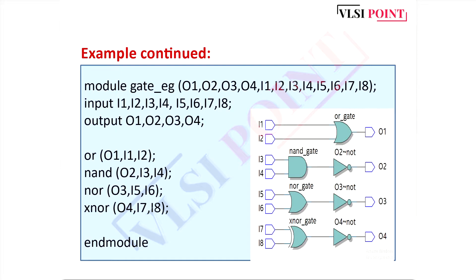Another example is also here. You can see that without giving the instance name, we can also write this circuit. There is an or gate, then and plus not gives nand gate, or plus not gives nor gate, and xor plus not gives xnor gate. Simply write: or, then output and input ports. You can skip the instance name part.